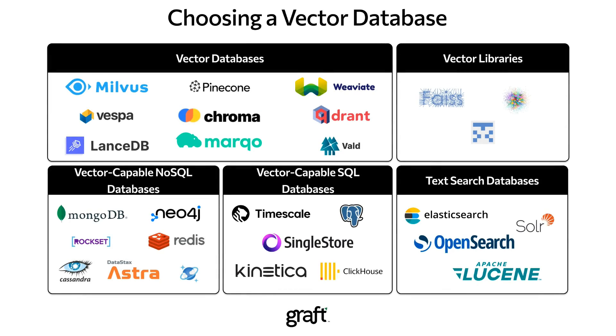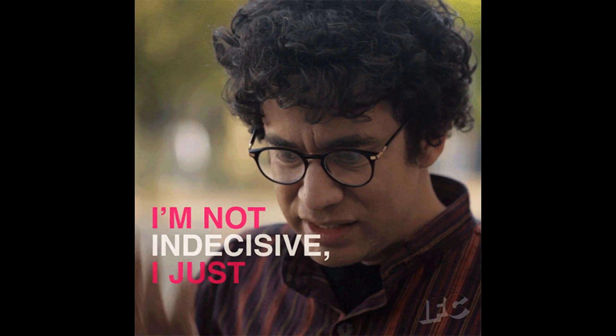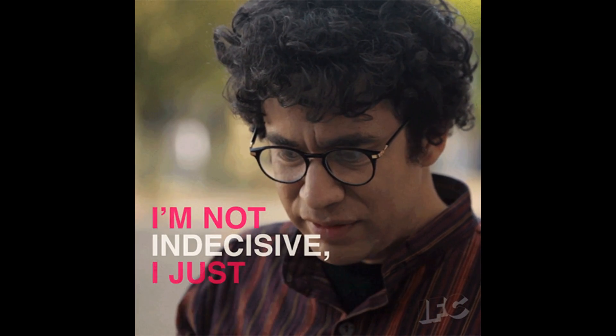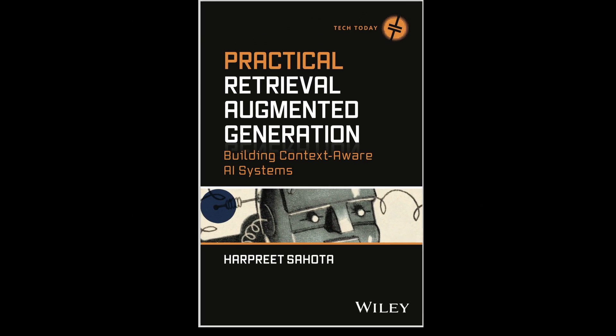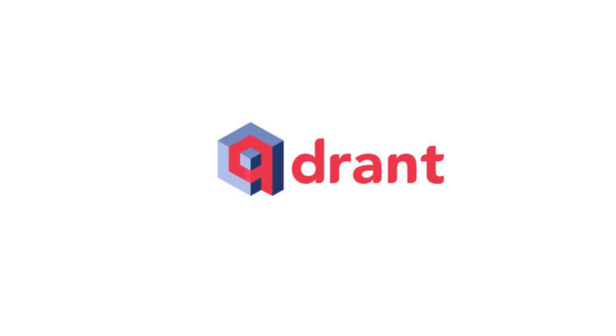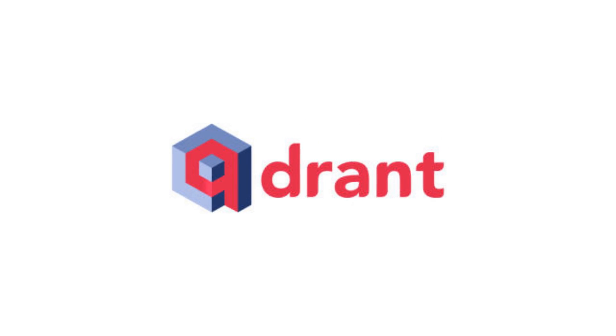We'll discuss how this works in depth as we progress along in this series. But for now, I want to discuss choosing a vector database. No doubt the market for vector databases is exploding — there are numerous options out there. The hard part is choosing which one you want to use for your project, or in my case, which one to include in a book that's going to have my name attached to it forever. After much thinking, I decided to use Quadrant for my book and for my LinkedIn Learning course.